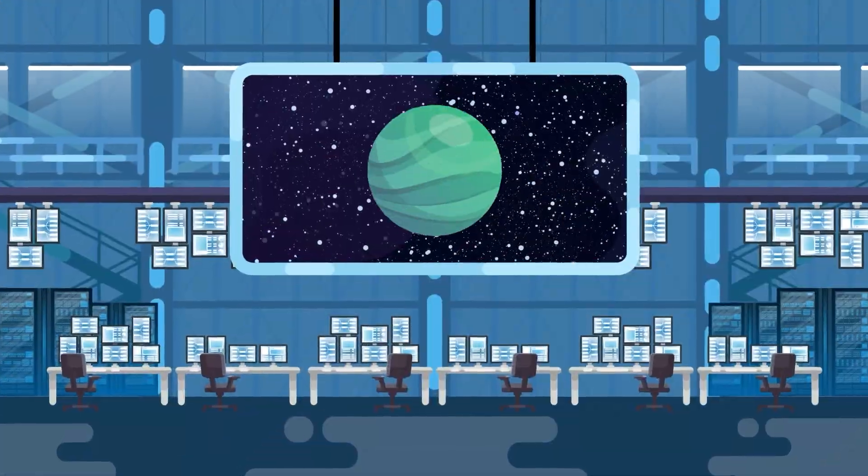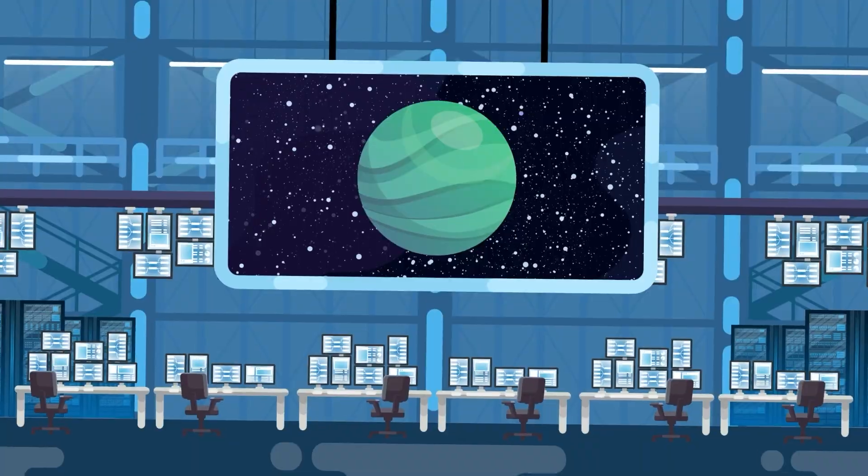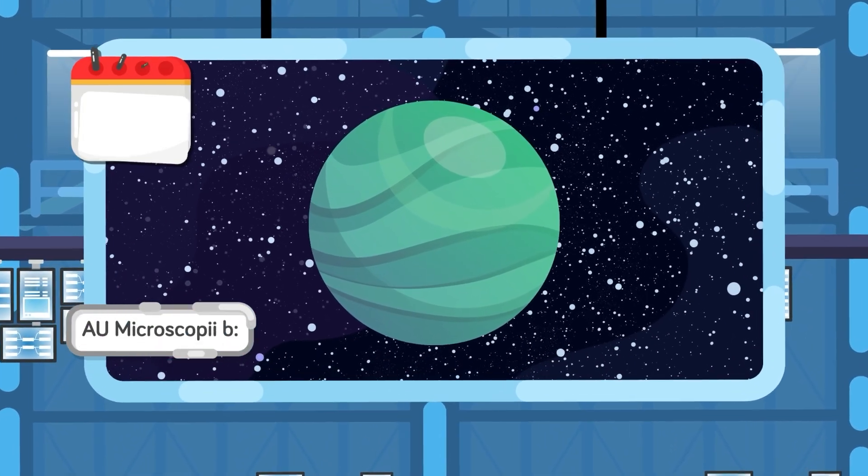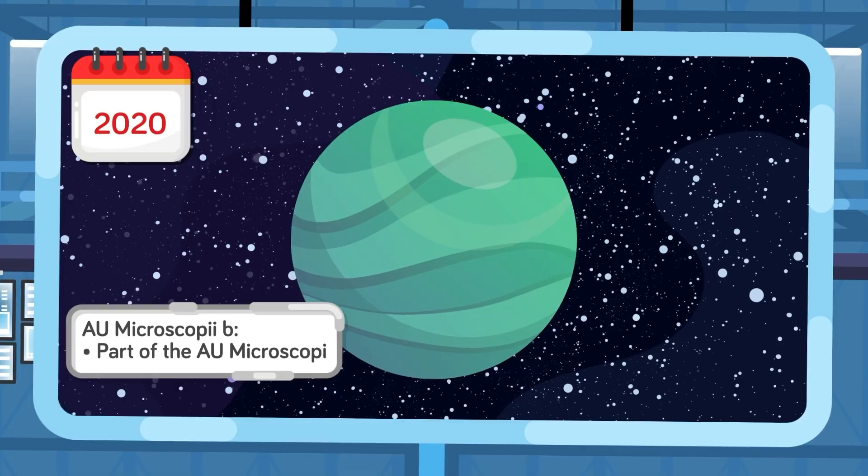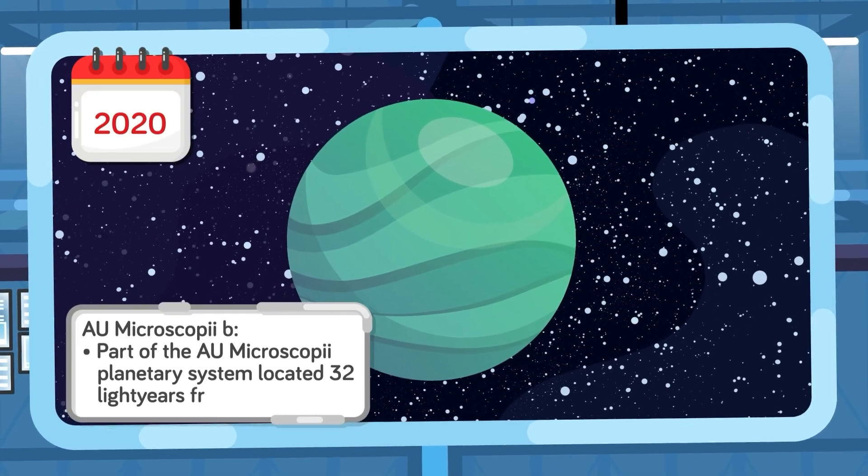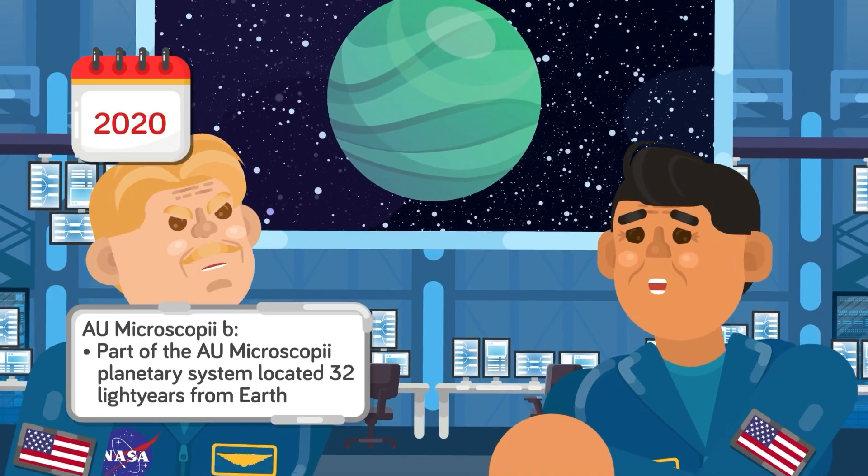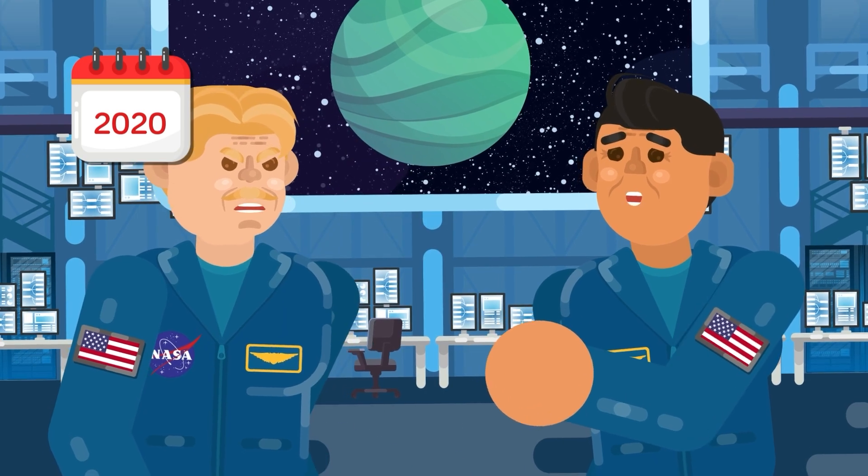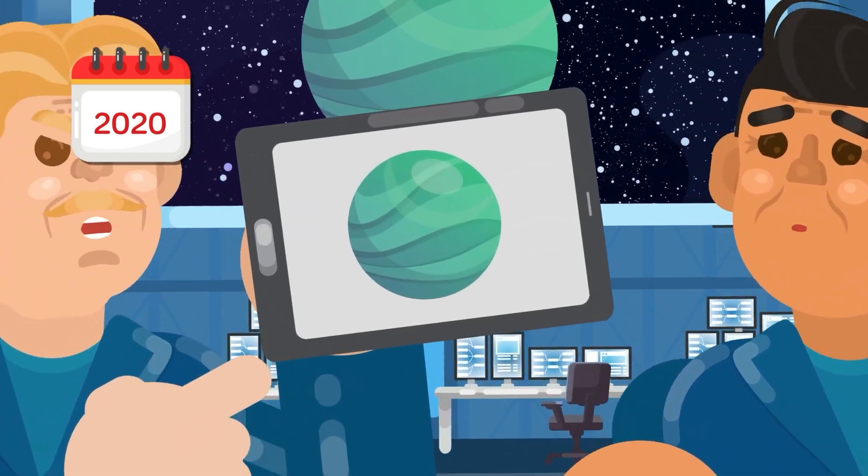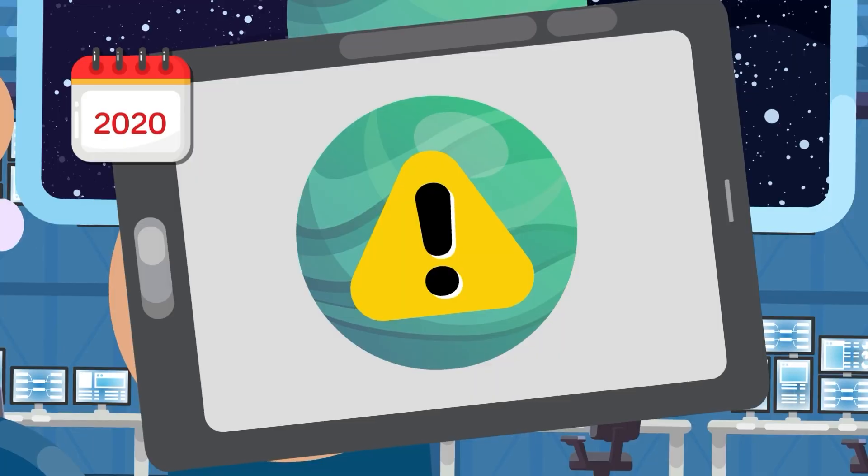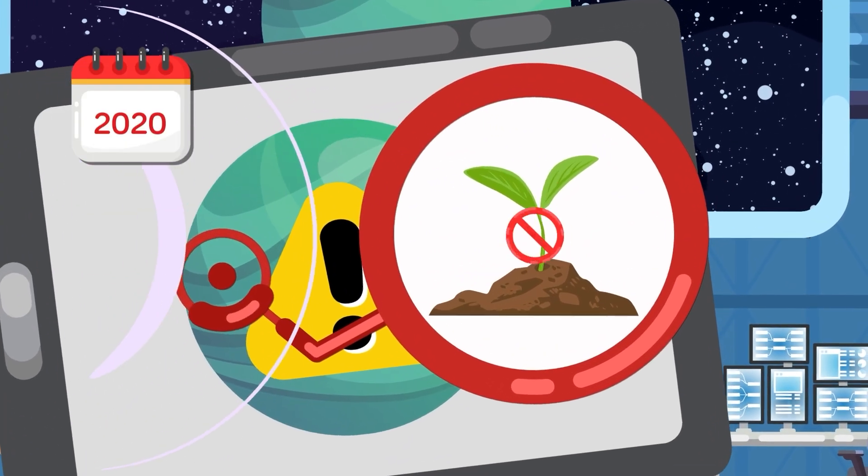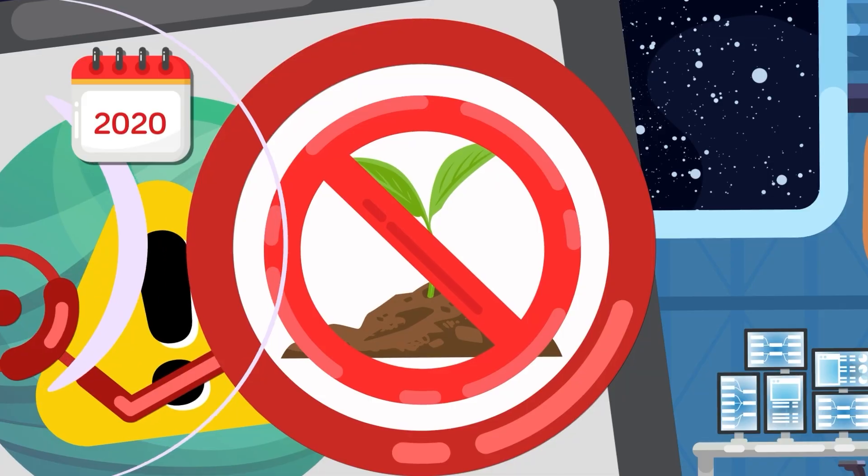But these are far from the only planets harboring deadly secrets in the far reaches of the galaxy. AU Microscopy b was first discovered by NASA in 2020, part of the AU Microscopy Planetary System located 32 light years from Earth. It's one of the youngest planetary systems ever observed by astronomers. But don't think that just because it's comparatively young, it isn't just as deadly. AU Mic-b is constantly blasted with powerful x-rays, sterilizing the surface of the planet, and making life there physically impossible.